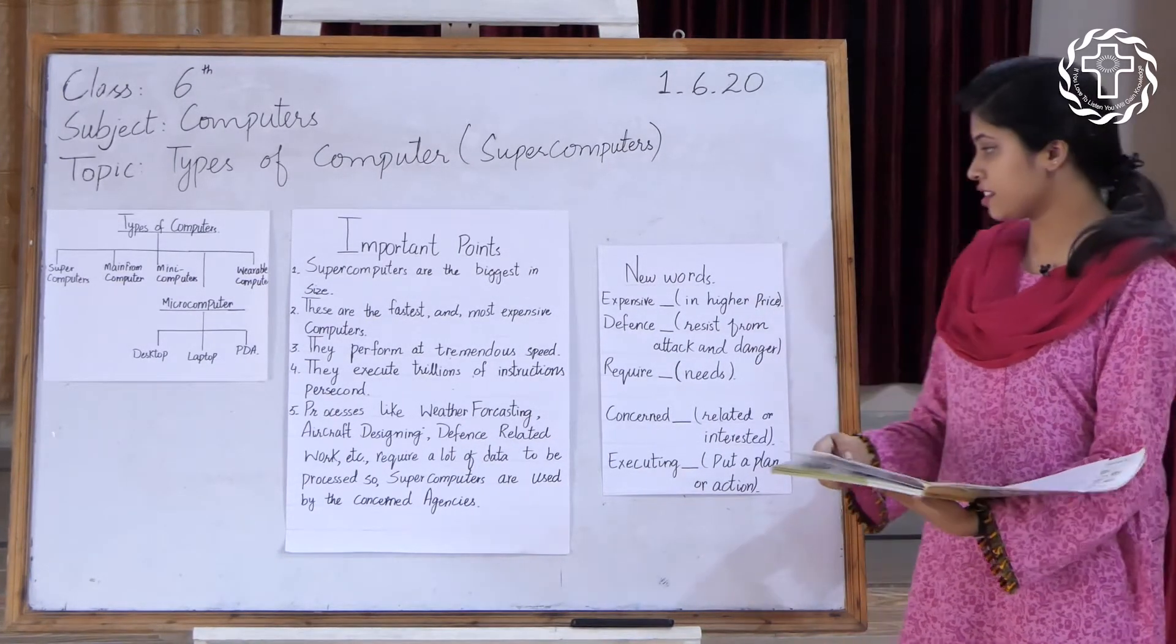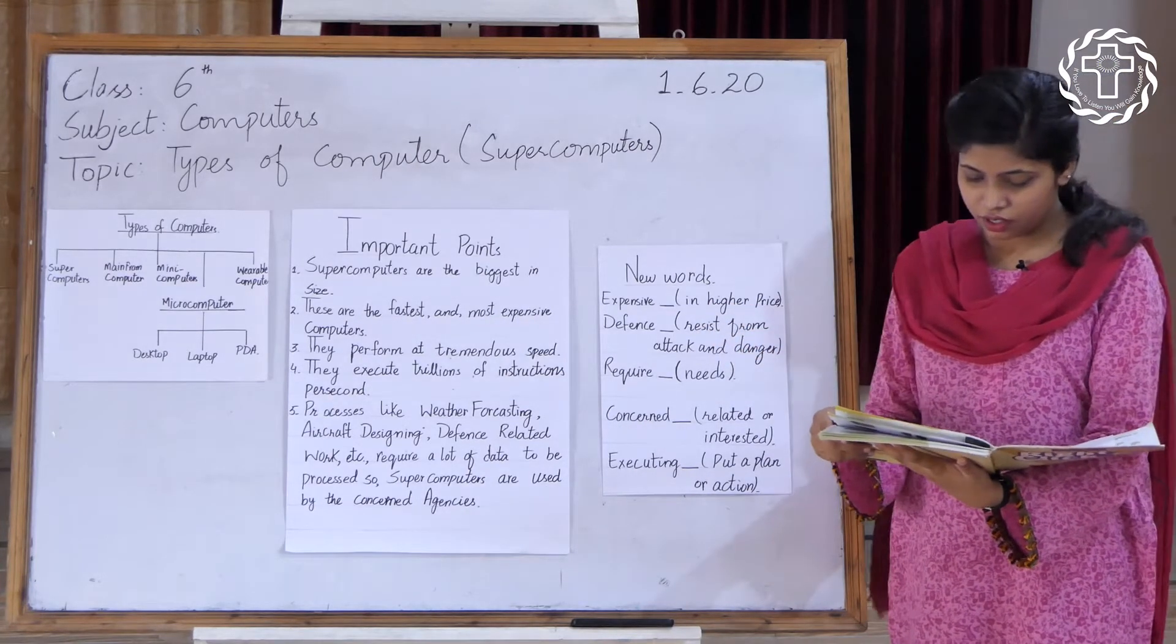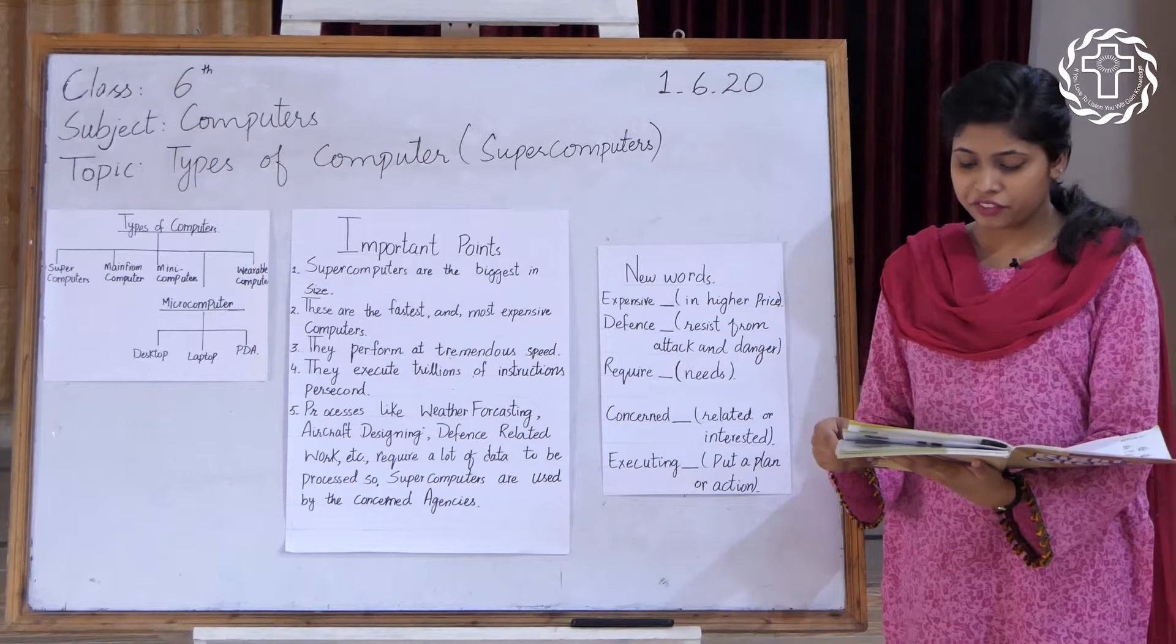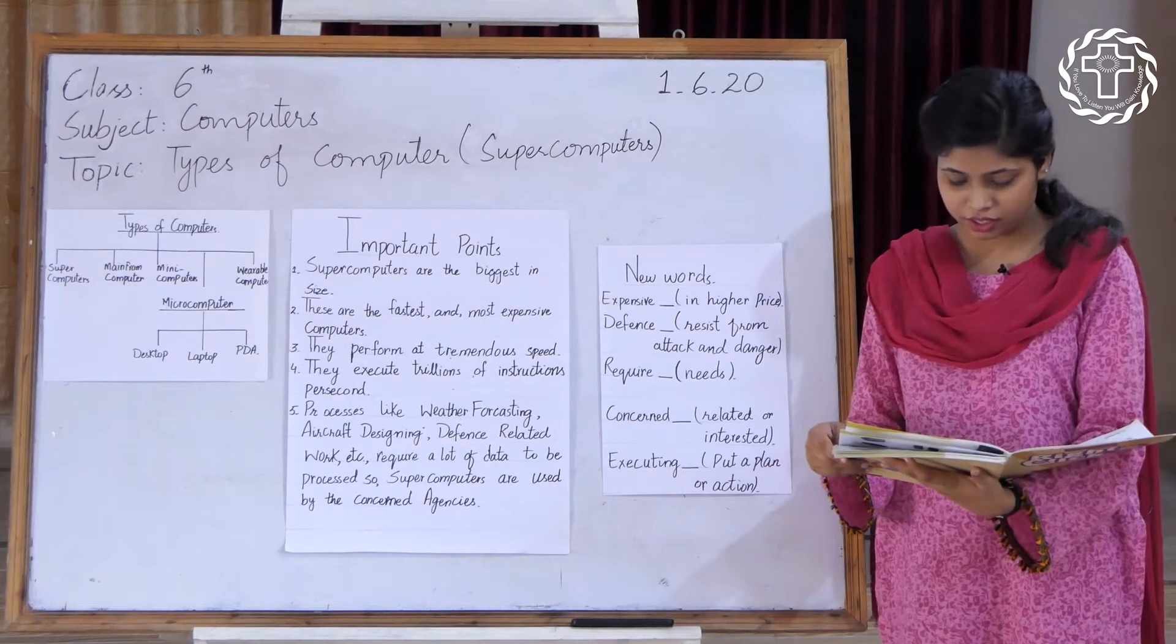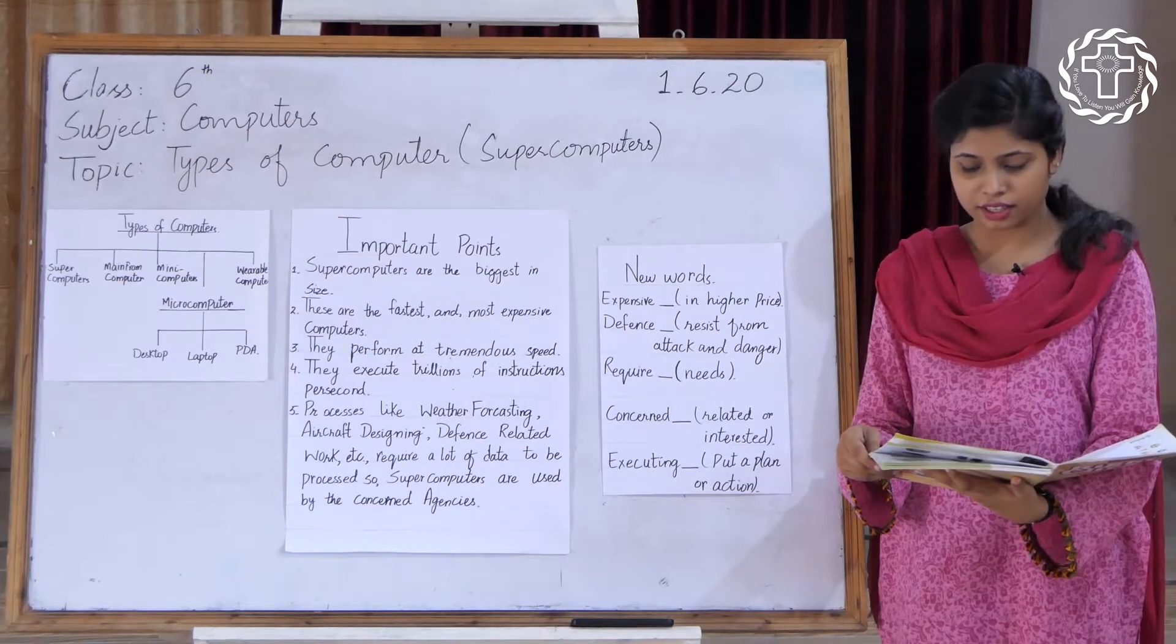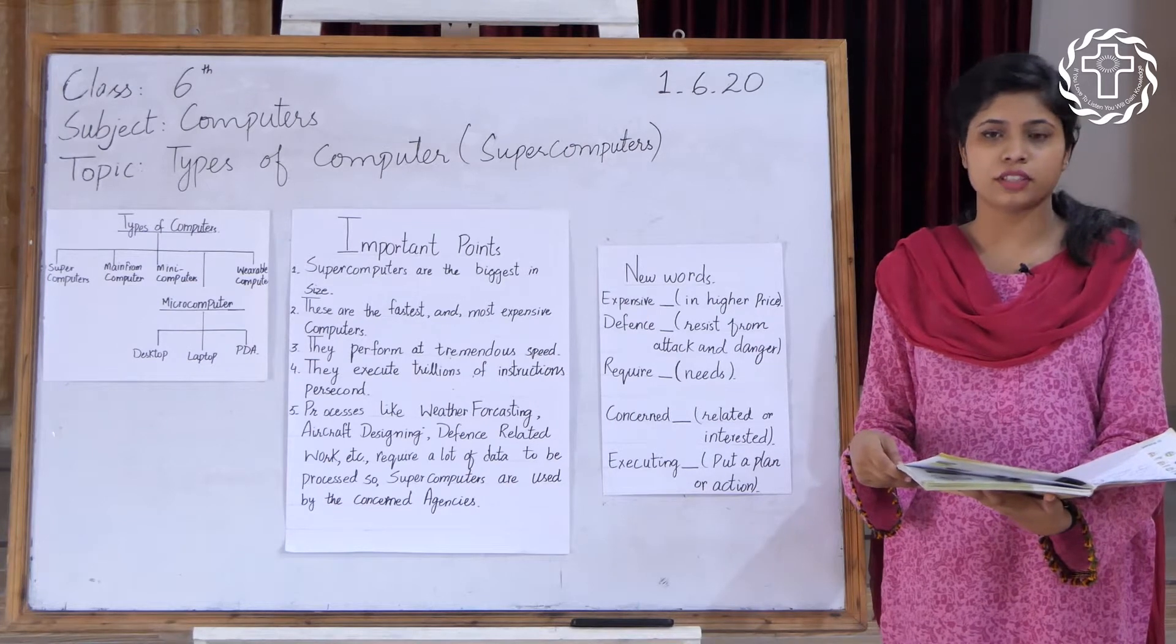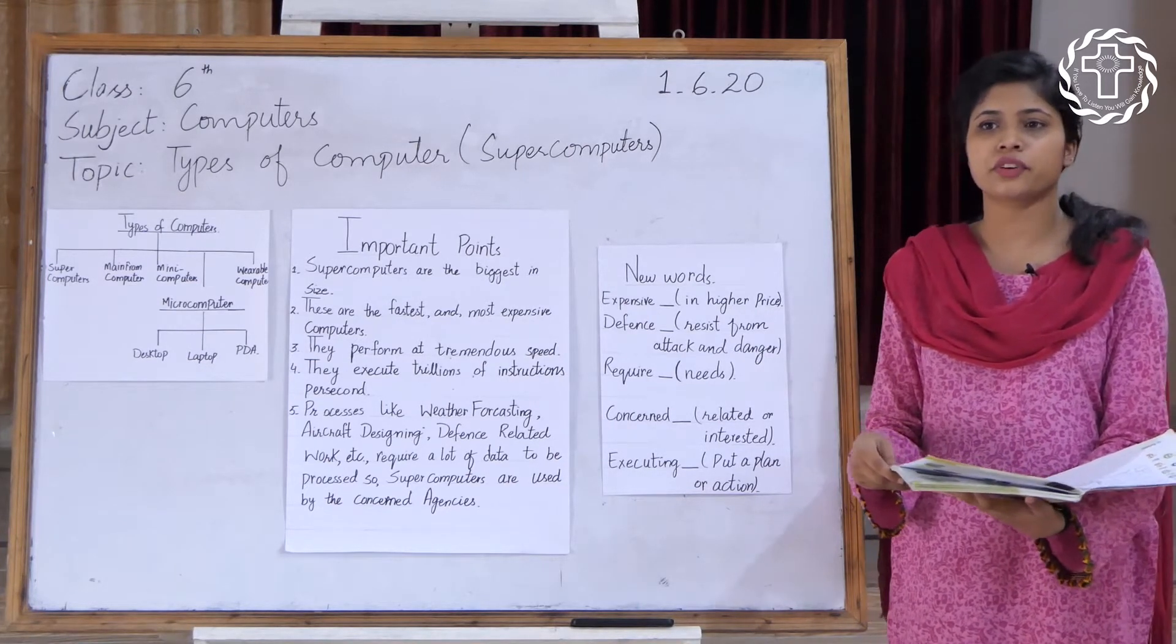Expensive means higher in price. They perform at tremendous speed. Tremendous means very high speed. Execute trillions of instructions per second. It means they work at very high speed and they can perform or execute trillions of instructions per second.